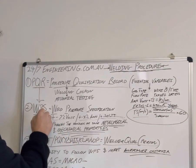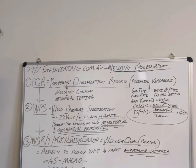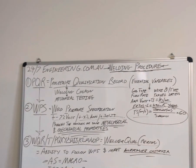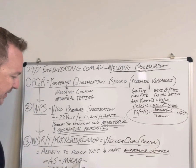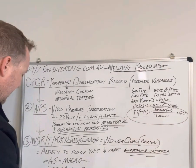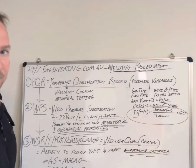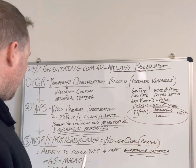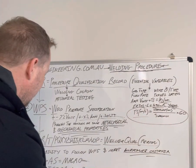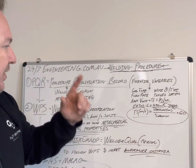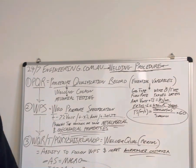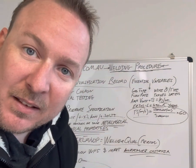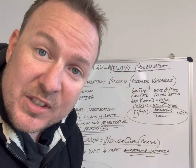So to summarize: you've got the PQR, the WPS, and then all the people who qualify to the WPS. Under Australian Standards, the qualification typically lasts six months; under the ISO standard it can go for as long as three years. Give us a call if you want to get that sorted out — and that is why and how welding procedures exist.